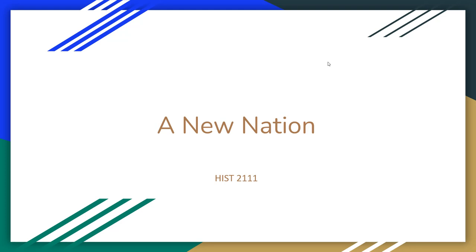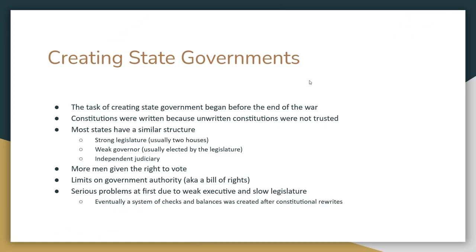This is all going to be about what happens after the Declaration of Independence. The first place that our government starts is not on the federal level — it's actually on the state level. The task of creating state governments starts before the Revolutionary War is guaranteed to be won. States needed to draft some type of written constitution that defined the power and the structure of the government, because they didn't trust the unwritten constitutions of Britain.